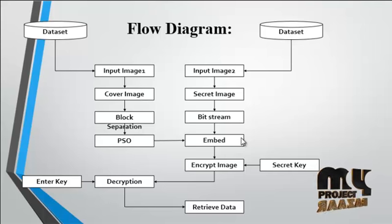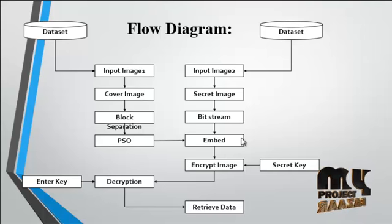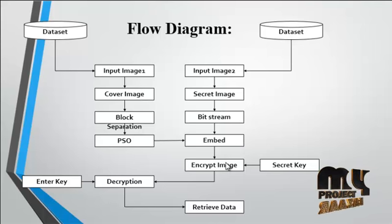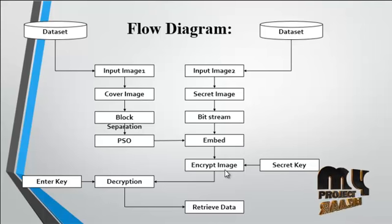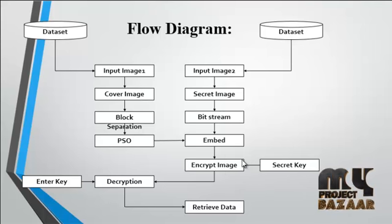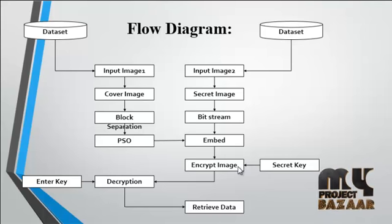The cover image only shows its appearance to the user, while the secret image is embedded into the cover image. After embedding, the encryption process is undergone — the encryption process is essentially the hiding of the data. The embedded image is encrypted using a corresponding key.